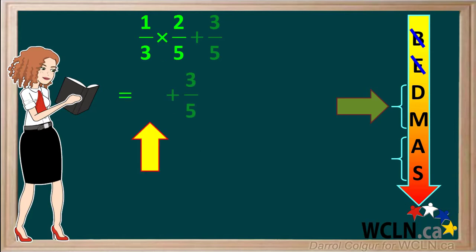One times two is two, and three times five is fifteen, so the answer to the multiplication is two-fifteenths.